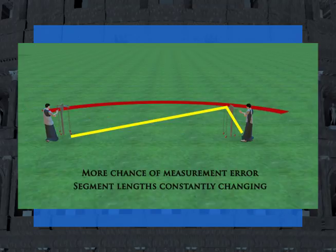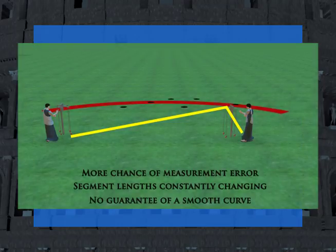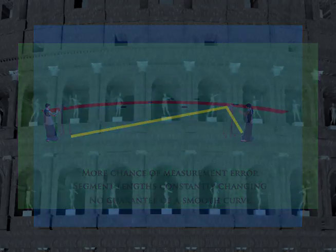Furthermore, constructing architectural plans or blueprints for an elliptical structure would have been impossible, since there's no way to construct an ellipse using a compass and a straight edge.